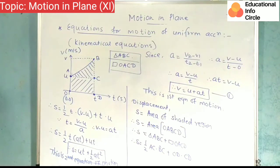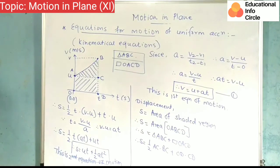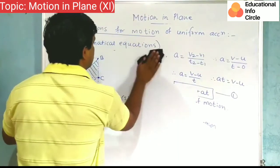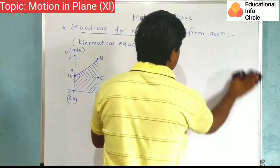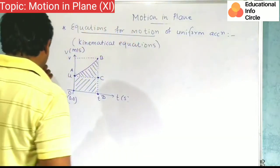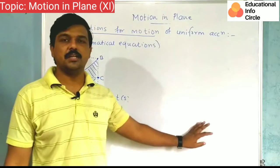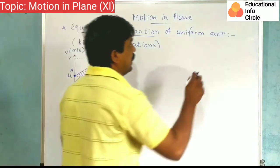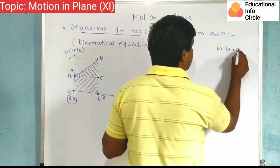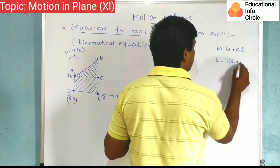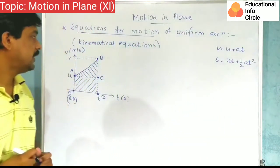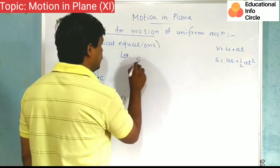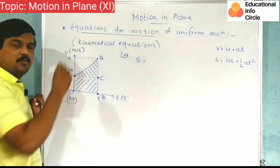Alright, now for the third equation, again consider displacement. We'll use a different approach this time. Now our motion has uniform acceleration, so velocity is increasing in equal intervals of time. Acceleration is constant, so velocity is increasing.